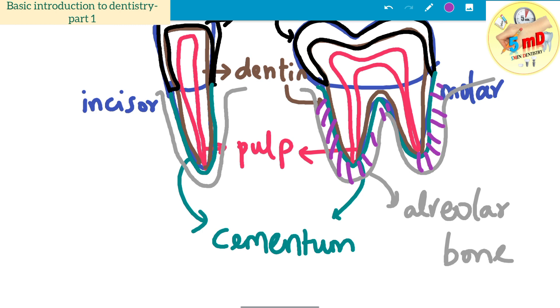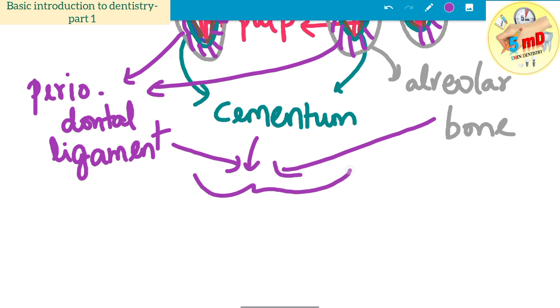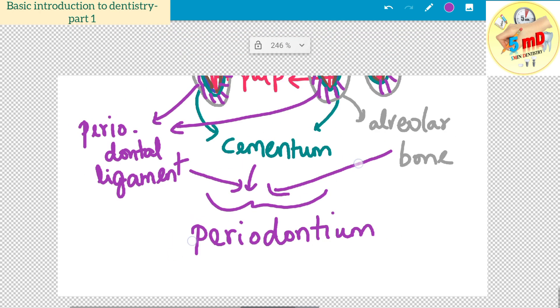The tooth is attached to the alveolar bone by means of certain ligaments known as the periodontal ligament. This periodontal ligament, cementum, and alveolar bone together form the periodontium—the attachment apparatus of your tooth.